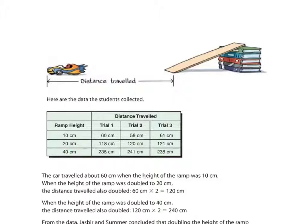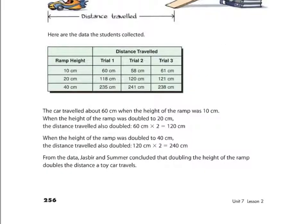So, 40 cm is double 20 cm. Trial number 1, 235 cm. Trial number 2, 241 cm. Trial number 3, 238 cm. A little bit less, 238 cm or so. But it is still fairly close. If the height of the ramp was doubled to 40 cm, so 120 cm was our 20 cm distance, times 2 would be about 240. They're pretty close to 240.